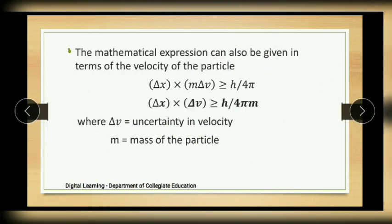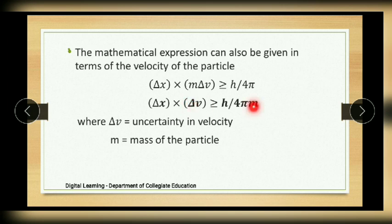This expression can also be written in terms of velocity: Δx × mΔv ≥ h/4π, which gives Δx × Δv ≥ h/(4πm), where Δv is the uncertainty in velocity and m is the mass of the particle.